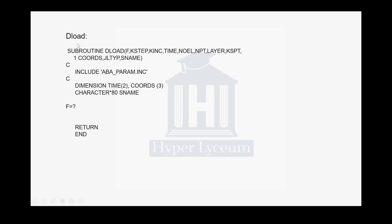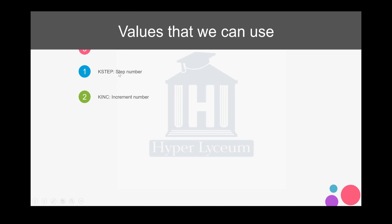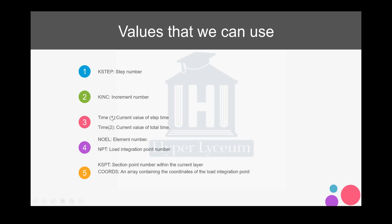The raw code is a subroutine with a few variables defined for you, but in the end you need to define the value for load. The variables we can use are: k-step which is the step number, k-increment which is the increment number, time 1 which is the current step time value. We're going to talk about time 1 and time 2, as well as NOEL which is the element number, NPT which is the integration point number.